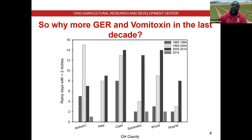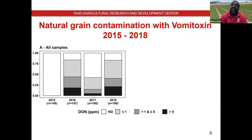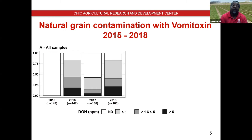We looked closer at vomitoxin levels in naturally infected grain between 2015 and 2018. In 2016 and 2018, over 75% — close to 80% — of samples had detectable levels of vomitoxin. In 2015, we basically detected no vomitoxin. In 2016 and 2018, about 40–45% of samples had vomitoxin between one and five parts per million, and about 20% had vomitoxin greater than five parts per million. 2017 was intermediate.